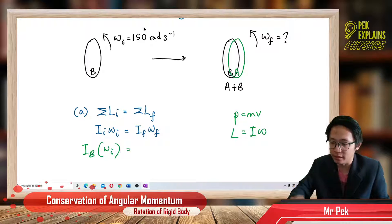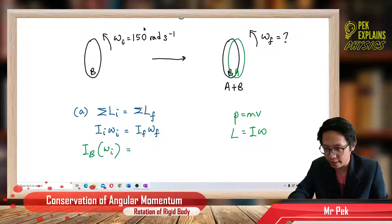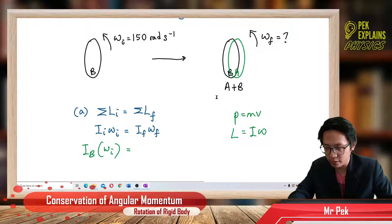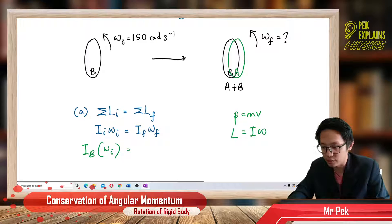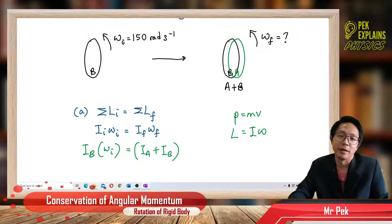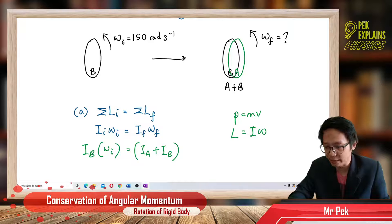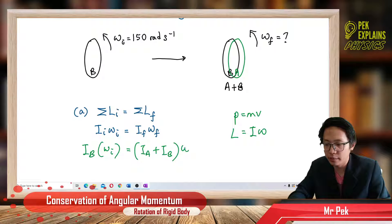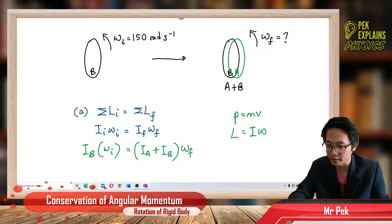For the final state, the moment of inertia is the combined value since they combine together — so we have IA plus IB. And then we want to find omega final.